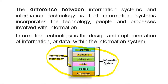Now, if we add people and processes and involve them in the organization, then all of those things — hardware, software, networks, data, people, and processes — become part of information systems. Take note that information technology is the design and implementation of information or data within the information system.